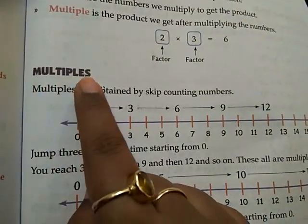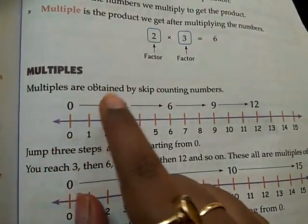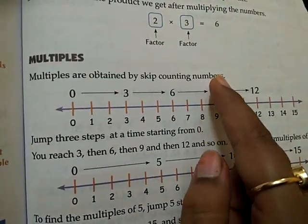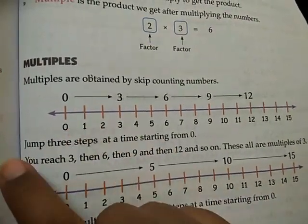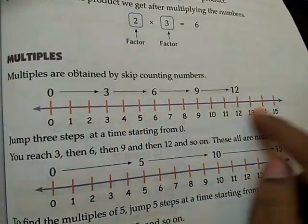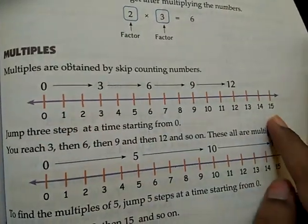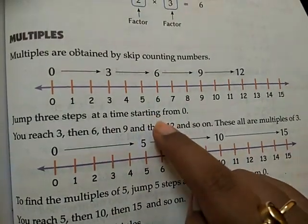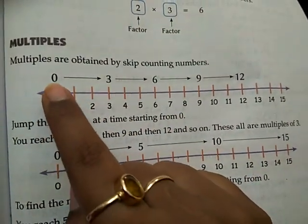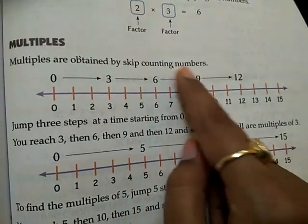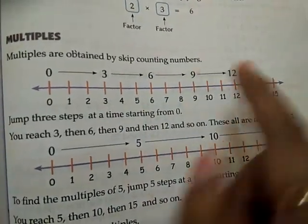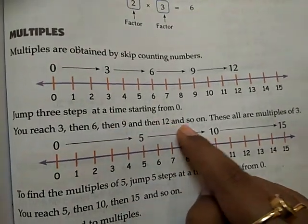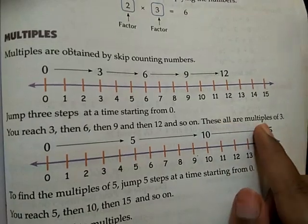Multiples are obtained by skip counting numbers. For example, if you want to find out multiples of 3, make a number line and write 0 to 15. Jump 3 steps at a time starting from 0: 0 to 3, then 6, then 9, then 12, and so on. So these are the multiples of 3.